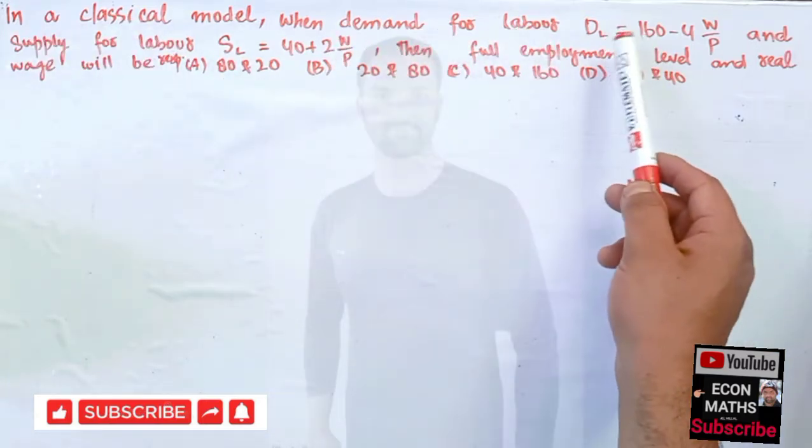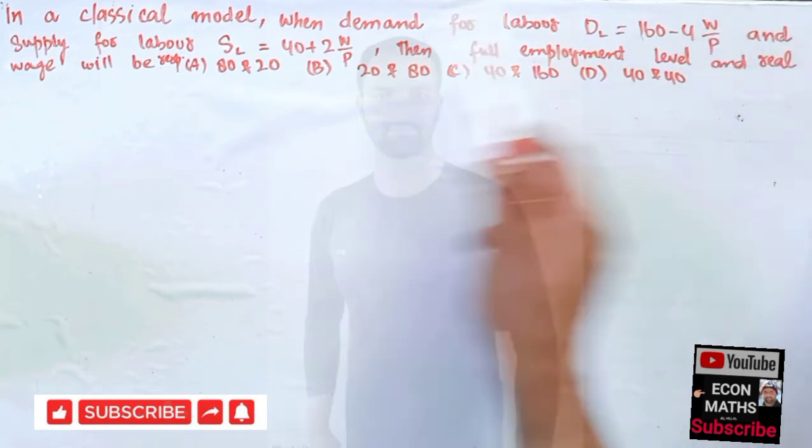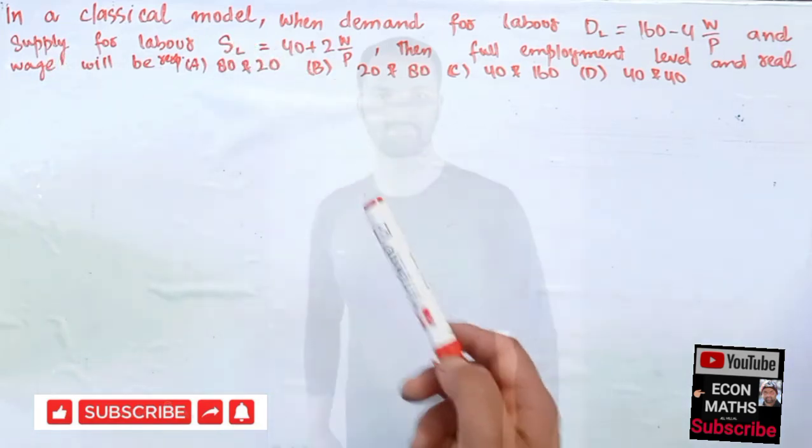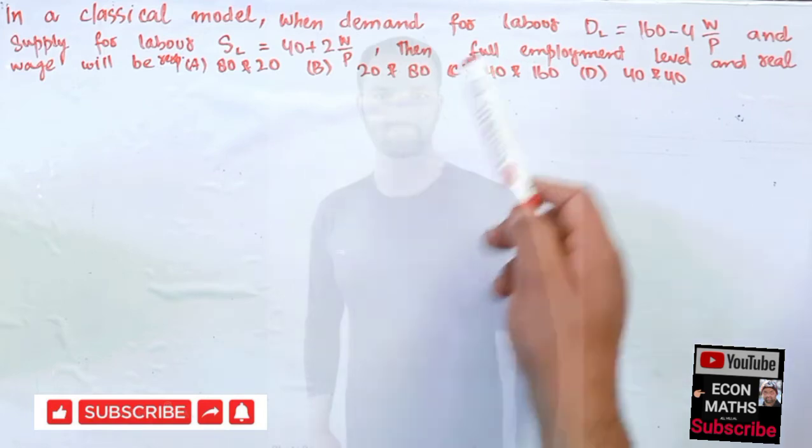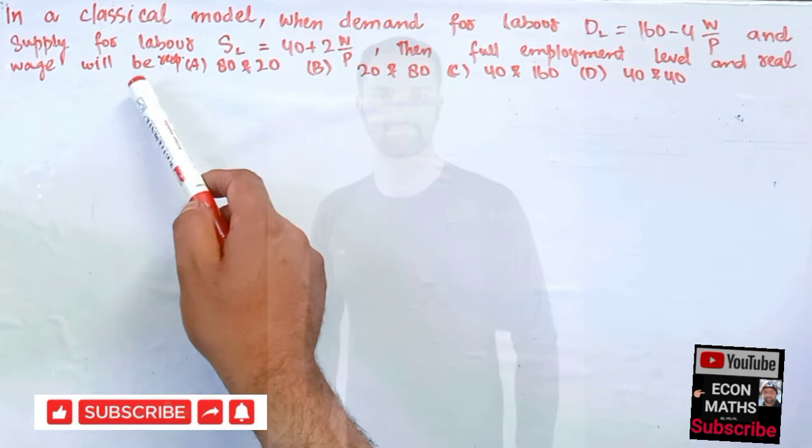DL = 160 - 4W/P, where W/P denotes the real wage, and supply for labor is given as SL = 40 + 2W/P, then full employment level and real wage will be respectively...